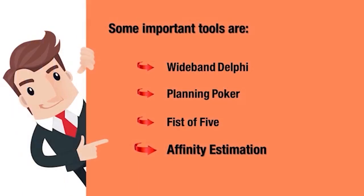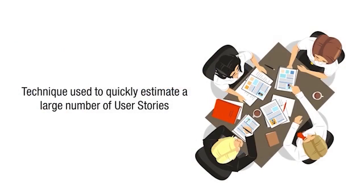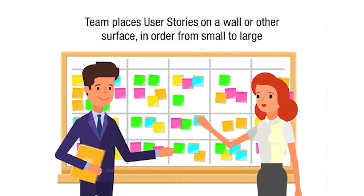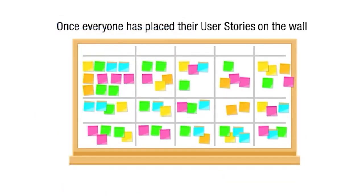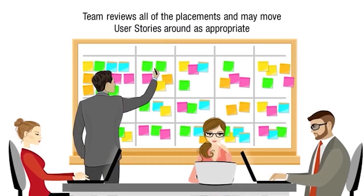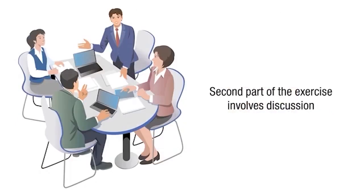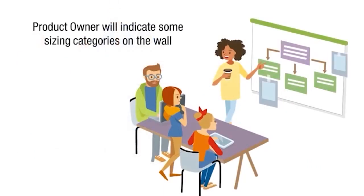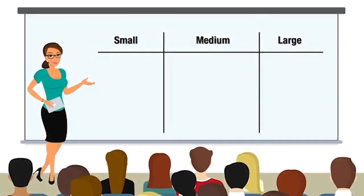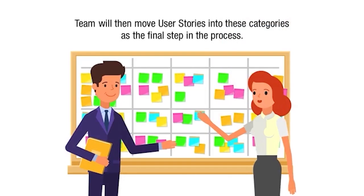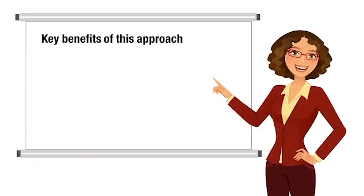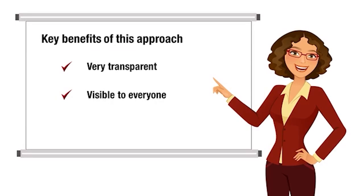The last technique is Affinity Estimation, used to quickly estimate a large number of user stories. Using sticky notes or index cards, the team places user stories on a wall in order from small to large. Each team member starts with a subset of user stories, placing them in silence, then the team reviews all placements and may move stories as appropriate. Finally, the product owner indicates sizing categories — small, medium, or large, or numbered story point values. The process is very transparent, visible to everyone, and easy to conduct.